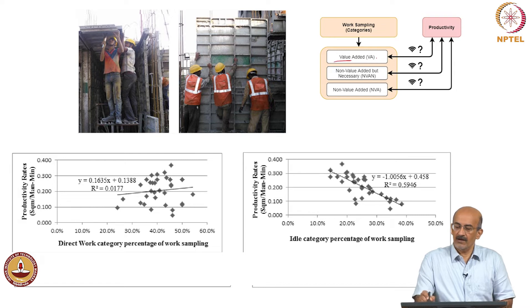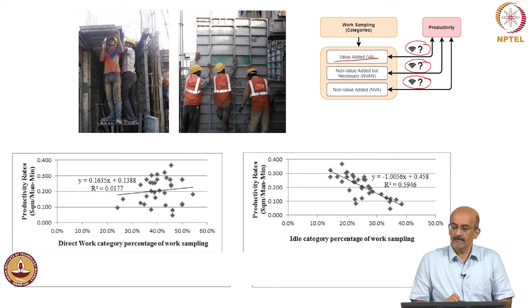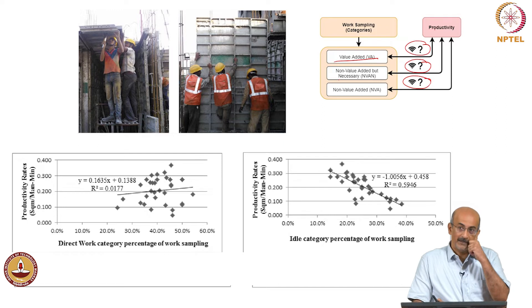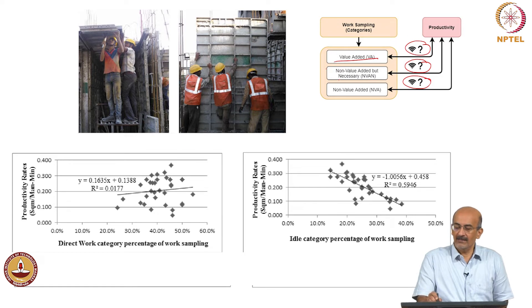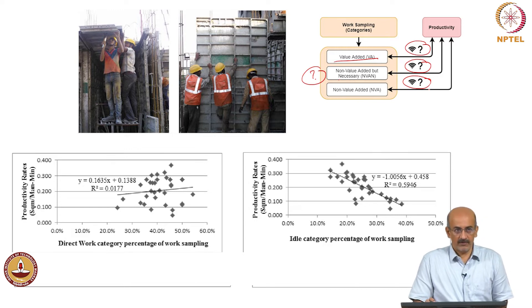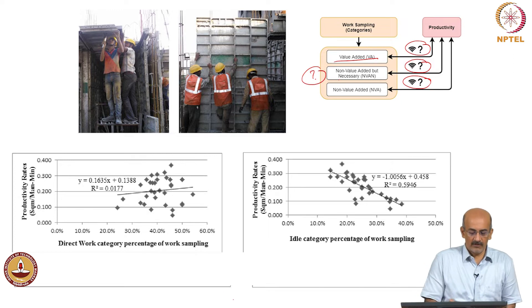So here we have value added and non-value added. What is the relationship between productivity and value added? It should be directly proportional — that is, more value added means more productivity. Between non-value added and productivity, the relationship should be inversely proportional.